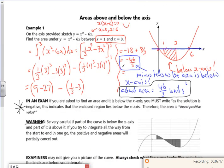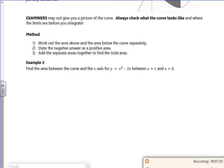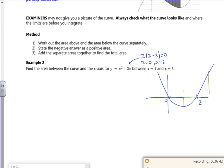Let's sketch it then. So I've got x² - 2x, that's x(x-2)=0, so I've got x is 0, x is 2, so something which looks like that. And I want the area between 1 and 3. So you can see I've got to split it between the two bits.